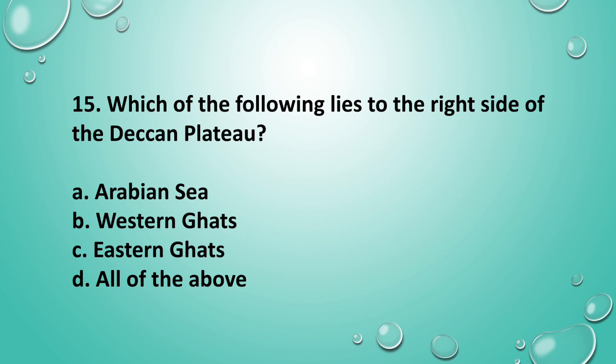Question 15: Which of the following lies to the right side of the Deccan Plateau? Don't forget to hit the like button. The answer is option C — Eastern Ghats.